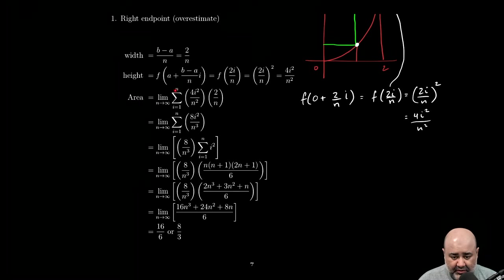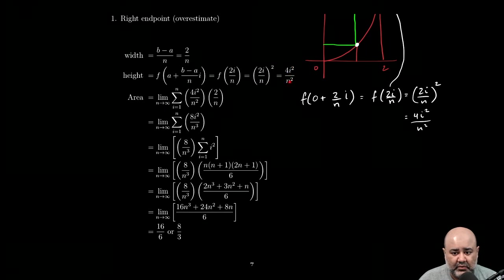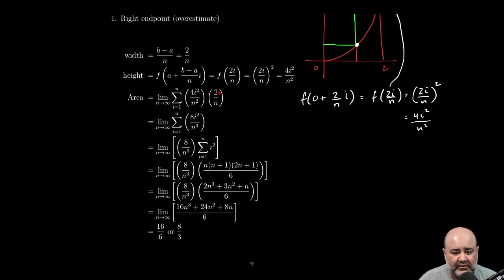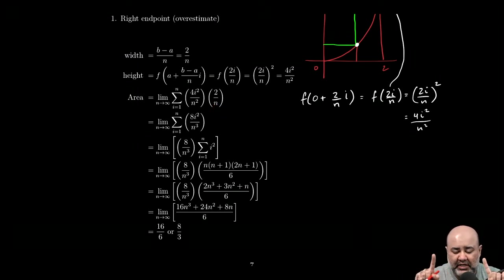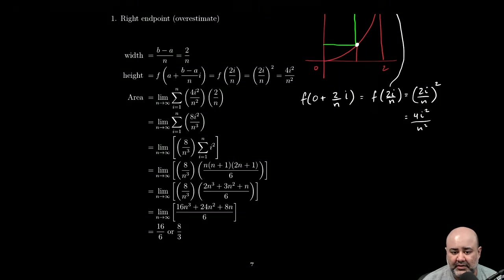Continuing on, now I want you to ignore these limits for now. Would we agree that the area with n subdivisions would be the height, the height is given by 4i squared over n squared, times the width, the width of each of those subdivisions is 2 over n. Make sure you understand where these two expressions came from. This is the height of each of the rectangles based on what i is. And this is the width of each of the rectangles. And it does not depend on i because the width is the same no matter where you are. If n goes up, the width goes down. If n goes down, the width goes up.